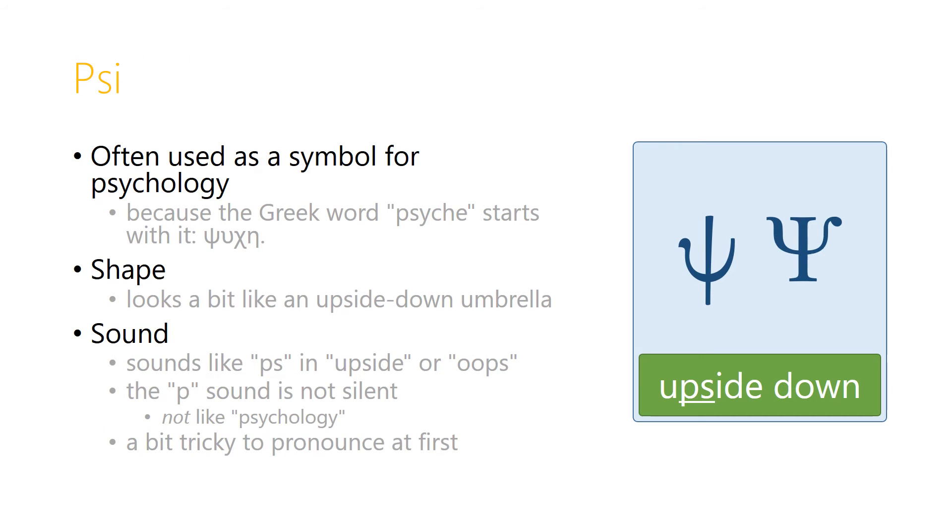The letter psi is often used as a symbol for psychology, and this is because the Greek word psyche, from which we get the word psyche, starts with the letter psi.